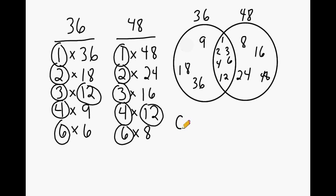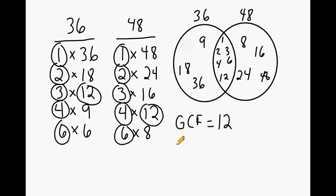Out of all these common factors, 12 is the greatest common factor. So we write that the GCF is equal to 12. Once you have located the greatest common factor, which is 12, you can easily find the least common multiple. Below where we wrote GCF, let's write LCM. To get the LCM, you start by writing down the GCF, which is 12.